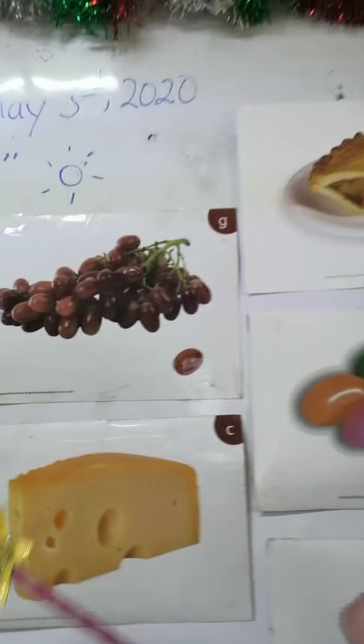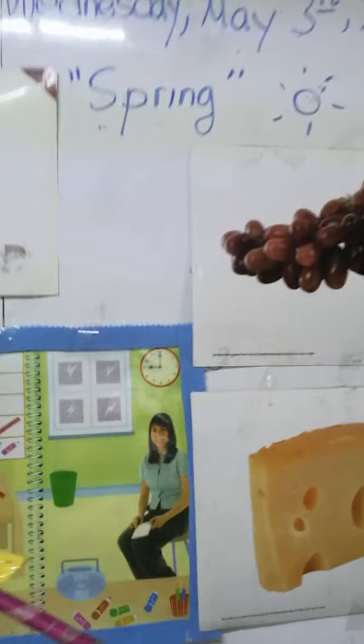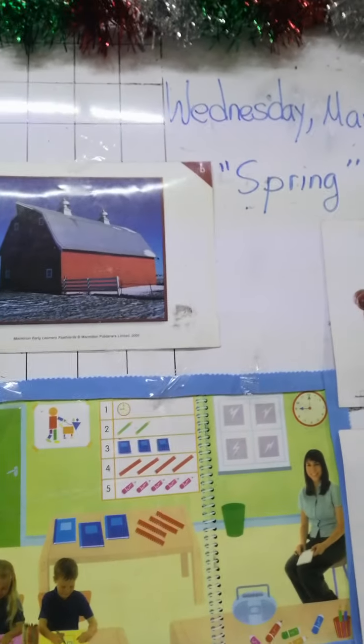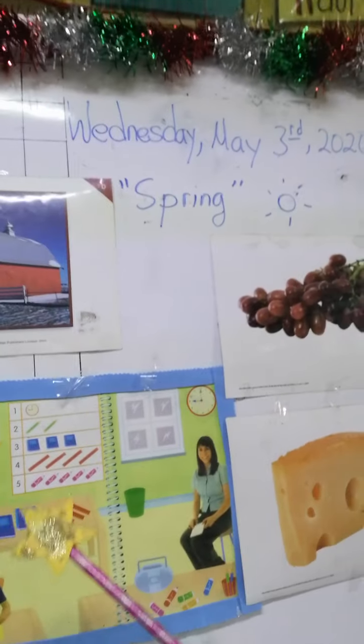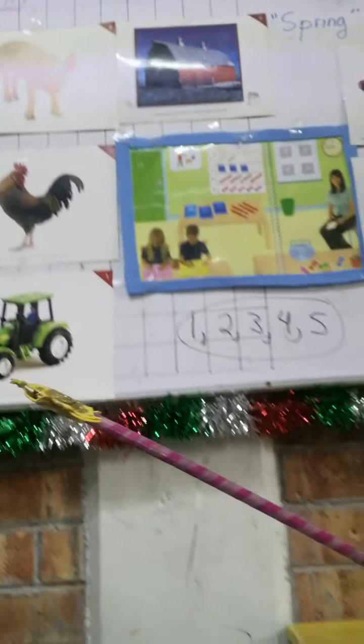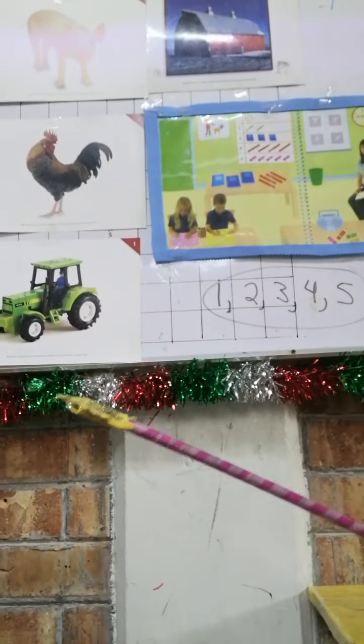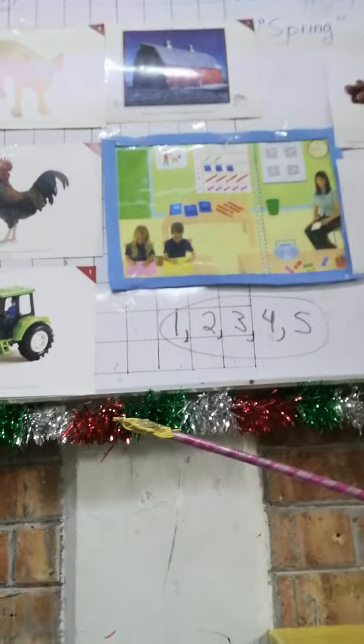Let's continue with the seasons of the year, kids. Spring, summer, fall, and winter. What season is it now, kids? Spring.